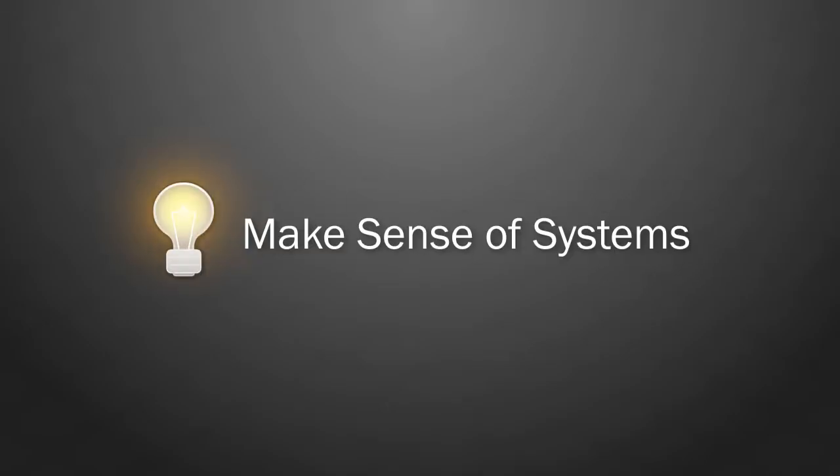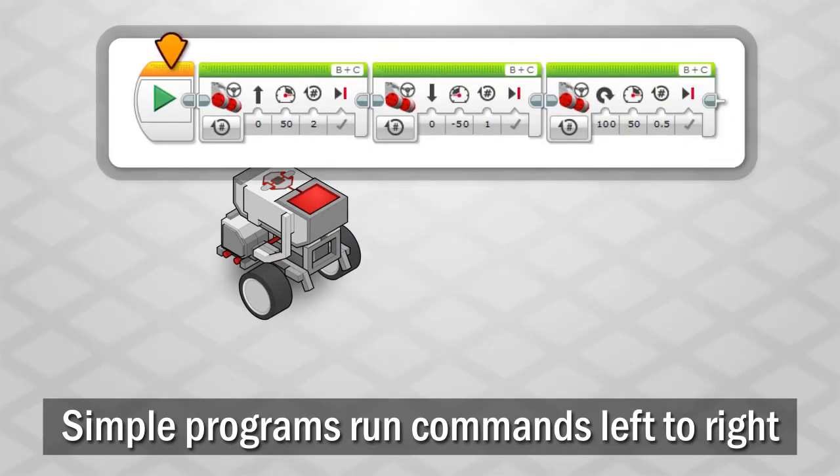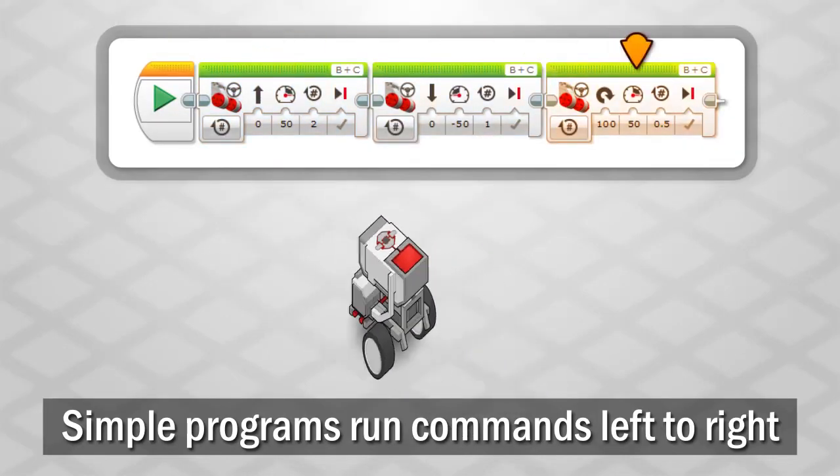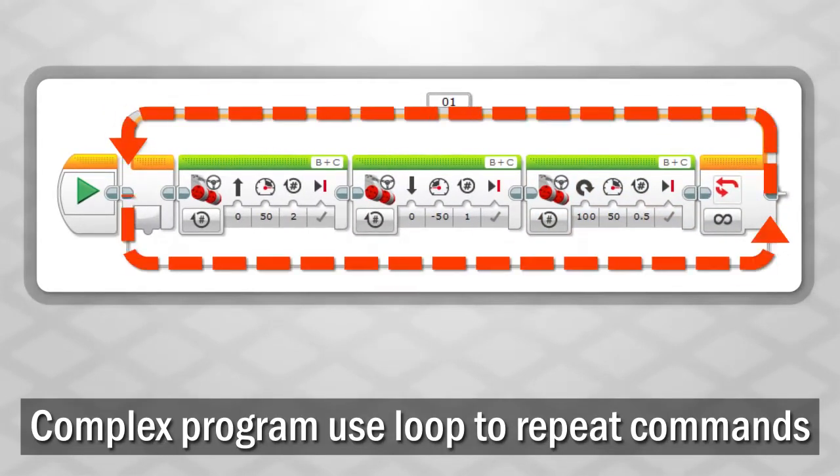Number three, make sense of system. Simple programs have a simple rule. Run commands in order from left to right. More complex ones might contain loop blocks that repeat the commands inside them.